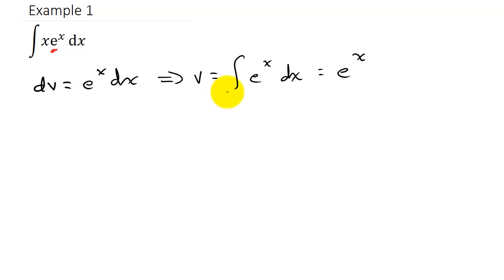And then I'm going to let u equal the other function x, so that means that du is equal to, well, the derivative of x is equal to 1, so that's 1 times dx, which is just dx. So this would be du.